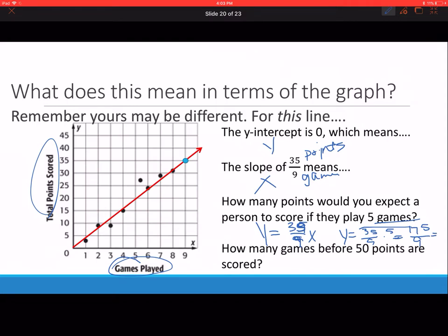That's going to be approximately 18 games. How many games before 50 points are scored? 50 points are the y-axis, so I put 50 equals 35 ninths x. To solve that, I multiply both sides by 9 over 35. Cross cancel. x equals 90 divided by 7, which is going to be 13 games approximately.